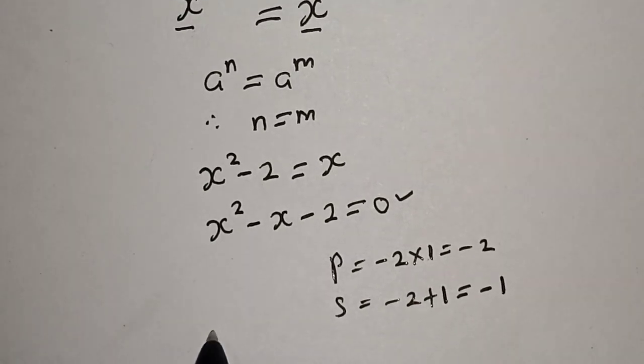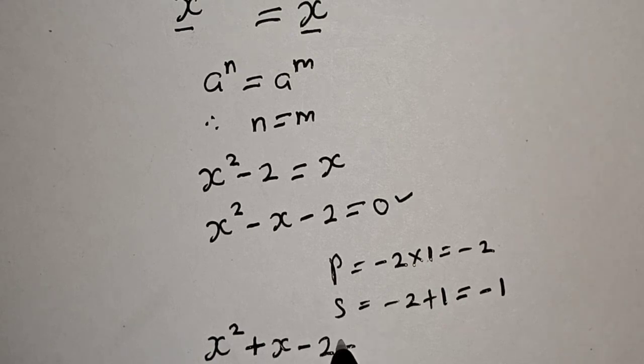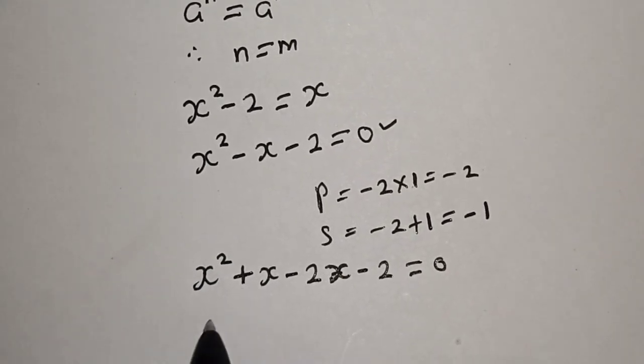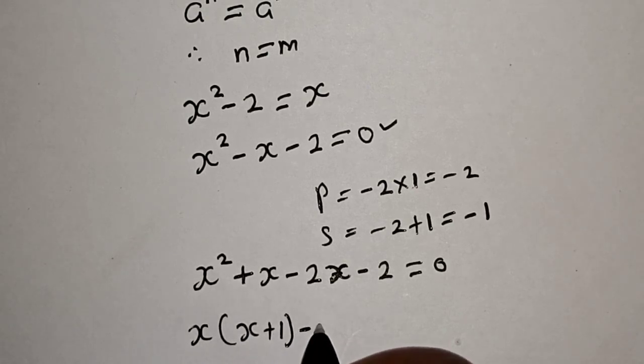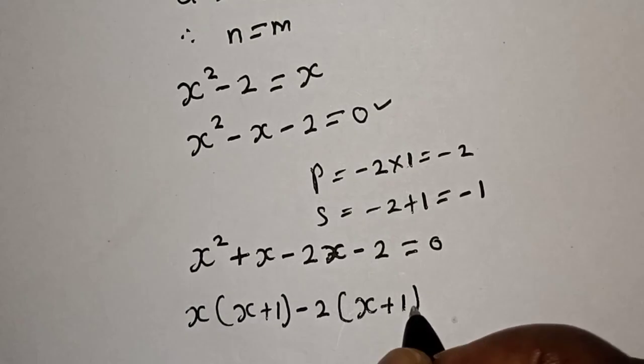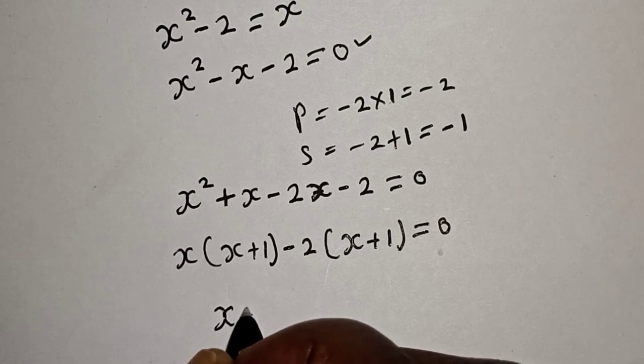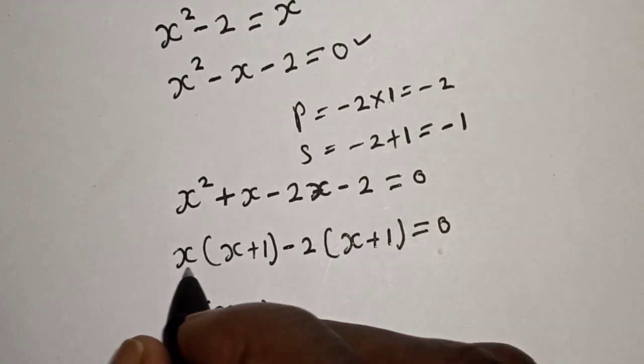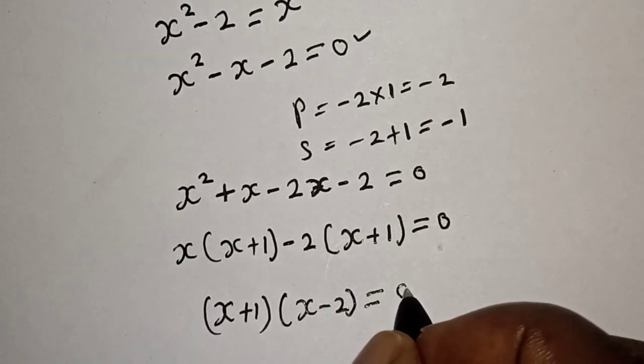We have x squared plus x minus 2x minus 2 is equal to 0. Factor by grouping: x bracket x plus 1 minus 2 bracket x plus 1. We get bracket x plus 1 bracket x minus 2 is equal to 0.